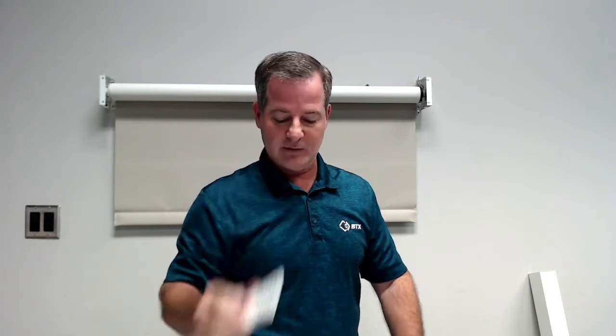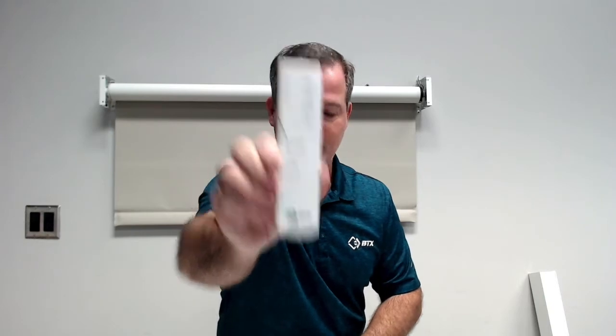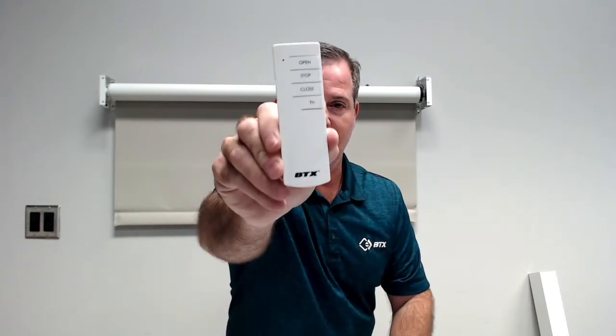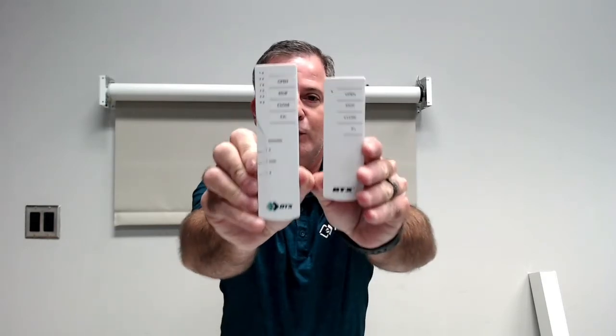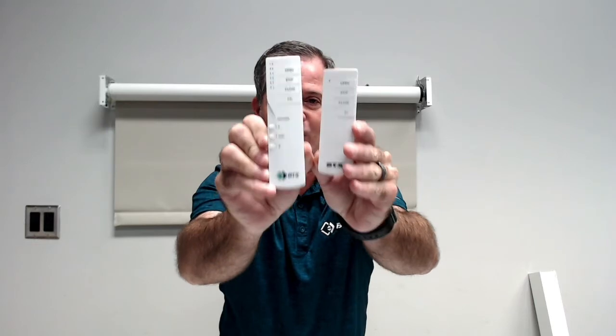So this particular unit is an accessory. It doesn't have some of the programming buttons that you get with the BTX remotes. We have our six channel remote, which is in our previous video, and we have a one channel remote that's in our previous video. To set limits and to set these motors up, you need to have one of these transmitters originally to set up first.